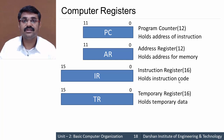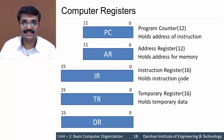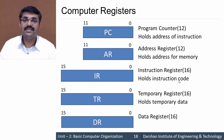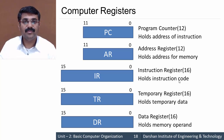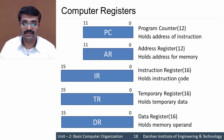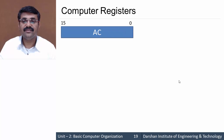TR is also used during the call and return of some subroutines. Then we have the Data Register DR, which is also of size 16 bits. DR holds the memory operand — that means the data which is fetched from the memory will be stored into this Data Register.